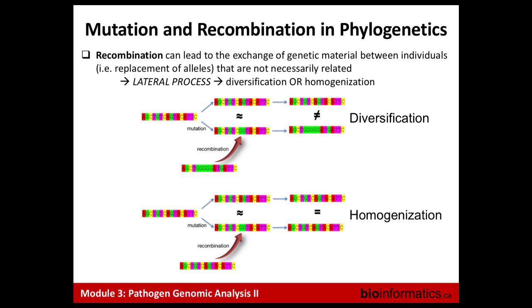Recombination can introduce diversity and simulate mutation in that a new allele parachutes in suddenly, possibly bringing in a large number of single nucleotide variations between two strains. But it can also have a homogenizing effect — if an allele has changed through vertical mutation, it can also be horizontally reverted back to the original. Recombination in bacterial populations complicates our interpretation of trees because it's not strictly vertical the way humans are.